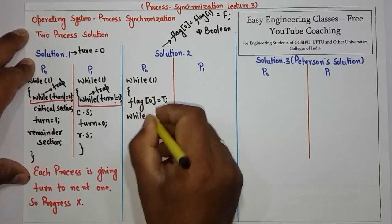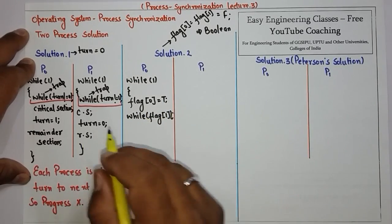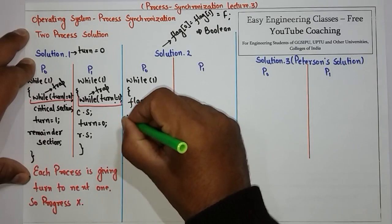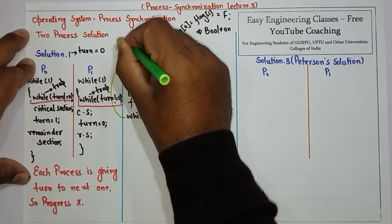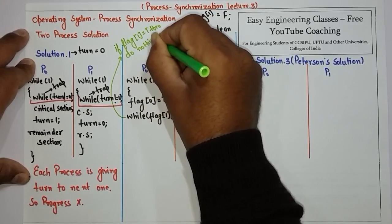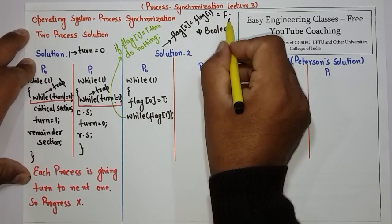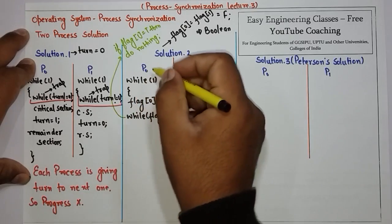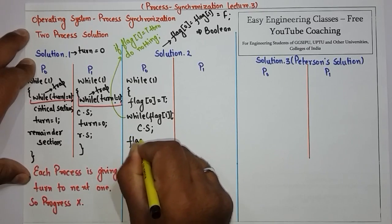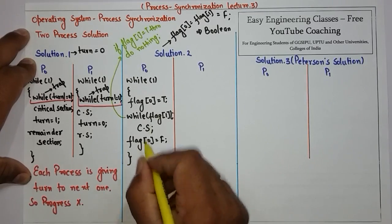After setting its flag, P0 checks the entry condition: while flag[1]. If flag[1] is true, the trap occurs and P0 does nothing and waits. Since flag[1] is initially false, P0 is allowed to enter the critical section. In the exit section, P0 sets flag[0] back to false.